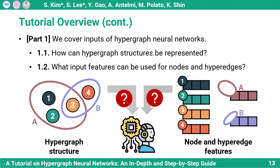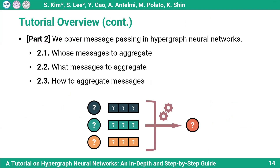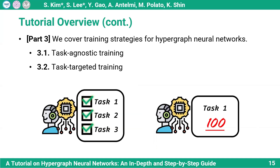In part one, we will cover inputs of hypergraph neural networks. In part two, we will cover message passing, a core module of hypergraph neural networks. In part three, we will present training strategies for hypergraph neural networks, covering both task-agnostic ones and task-targeted ones.